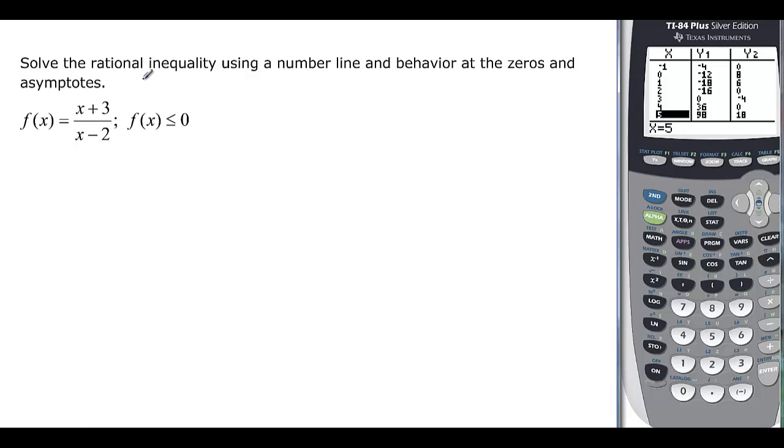Now we want to look at rational inequalities. And we want to use a number line again and behavior at the zeros and the asymptotes. And you have to remember about the asymptotes now. Because, remember, vertical asymptotes can't be included. So I'm going to factor all these things.